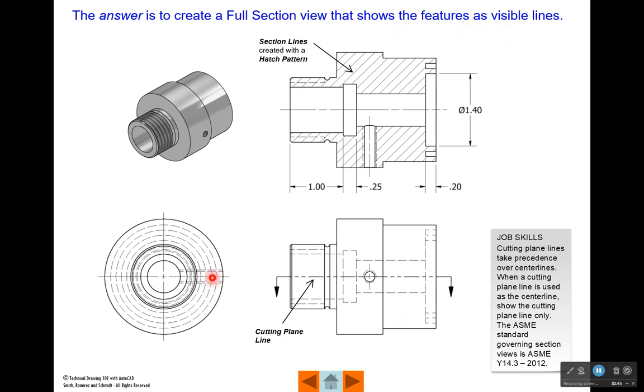The answer is to create a full section view that shows the features as visible lines. I'm going to add a cutting plane line across this and put those arrows in there. That tells the viewer that this view is what we would see if we were looking down on this part with this half removed. We call this a full section because we're cutting entirely through the part and removing half of the part. Once I remove this half, everything that was hidden before becomes a visible line, and now I can dimension to those features.